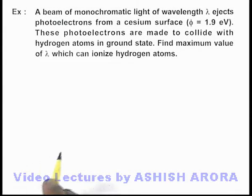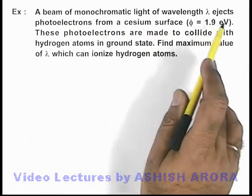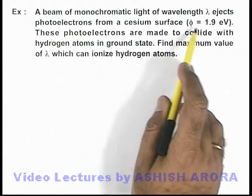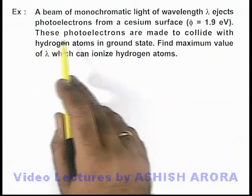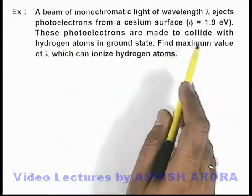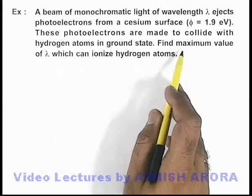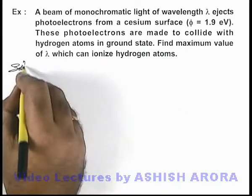In this example we are given that a beam of monochromatic light of wavelength lambda ejects photoelectrons from a cesium surface which has a work function of 1.9 electron volts. These photoelectrons are made to collide with hydrogen atoms in ground state. Now we are required to find the maximum value of lambda which can ionize the hydrogen atom.